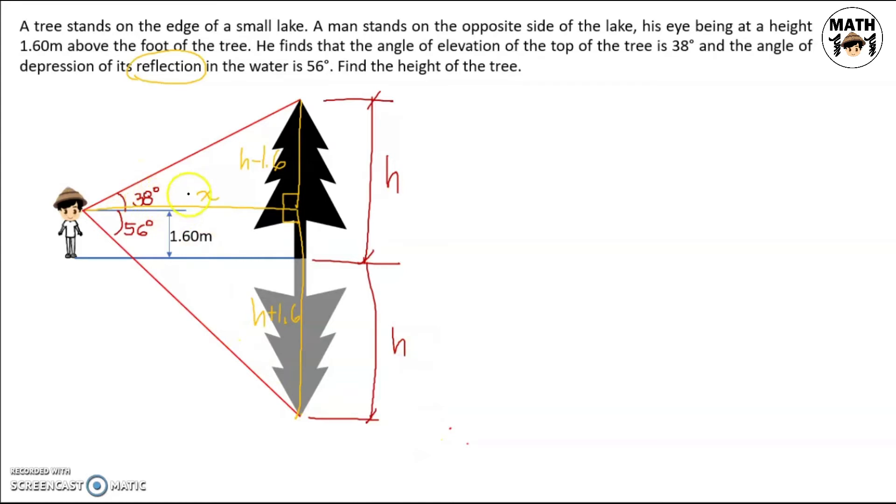If we're given an angle, a side opposite of it, and the adjacent side, what trigonometric function can we use? We can use tangent. So let's draw our first triangle and write the relationship from that. This is h minus 1.6, this is x, and this is 38 degrees. So tangent of 38 degrees is equal to the opposite side, h minus 1.6, all over x. We can solve for x. Let's make x the subject of the equation, so x is equal to h minus 1.6 over tangent of 38.